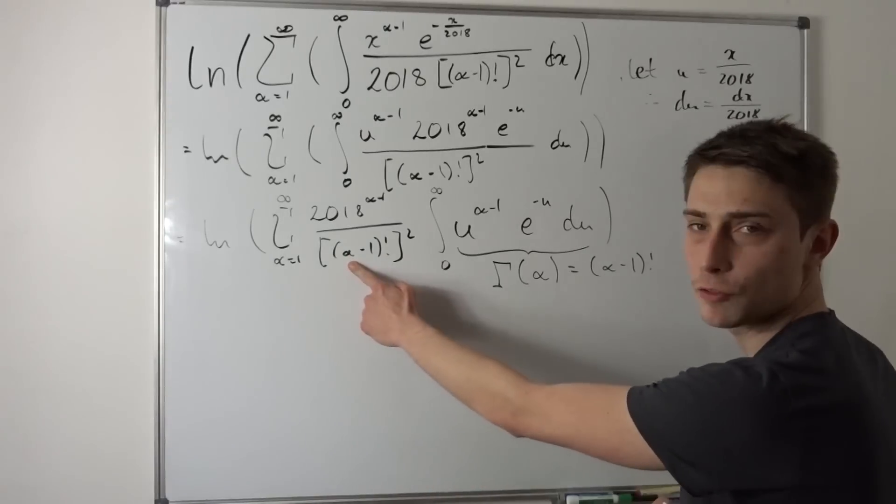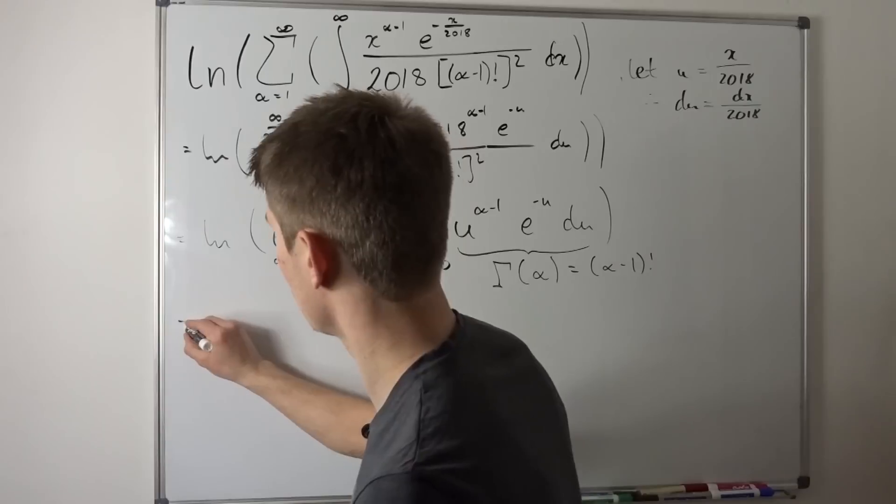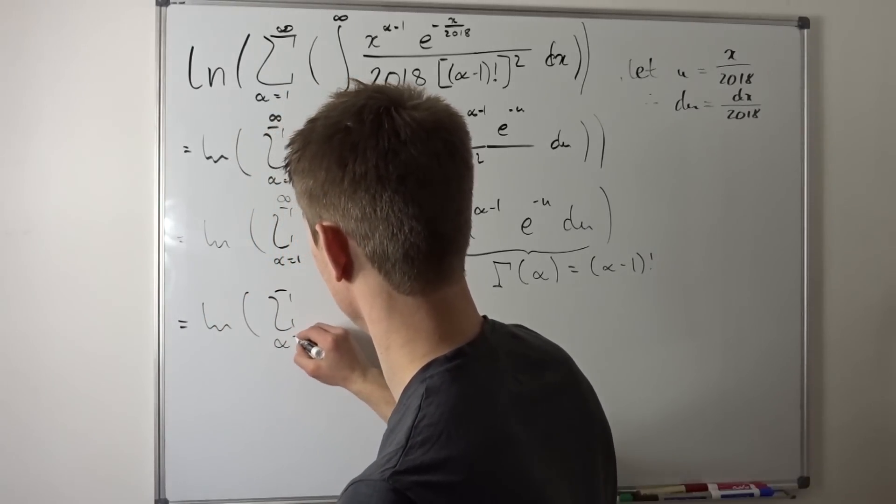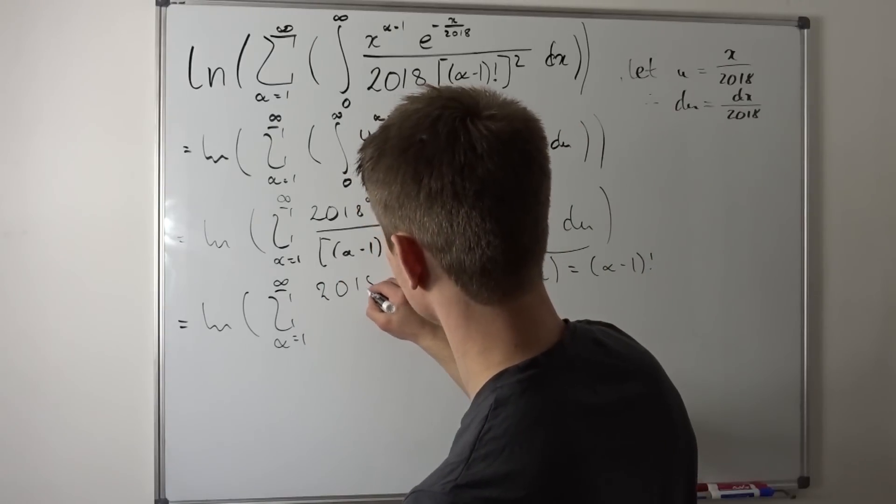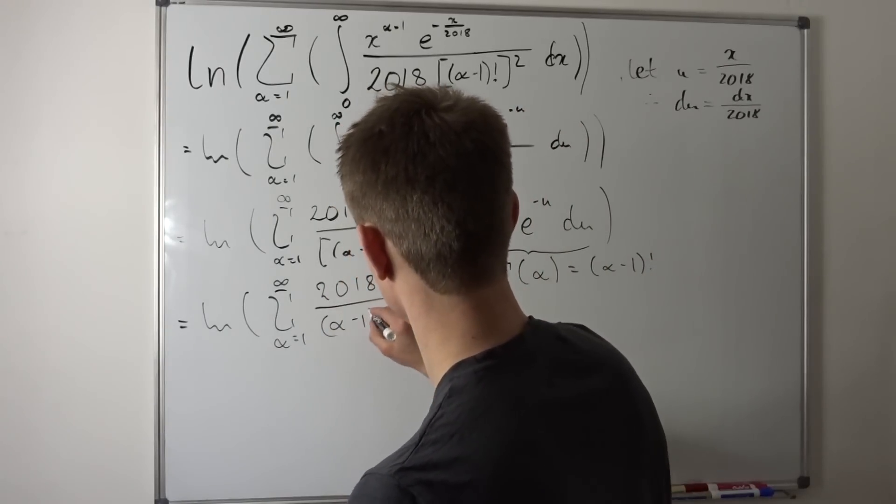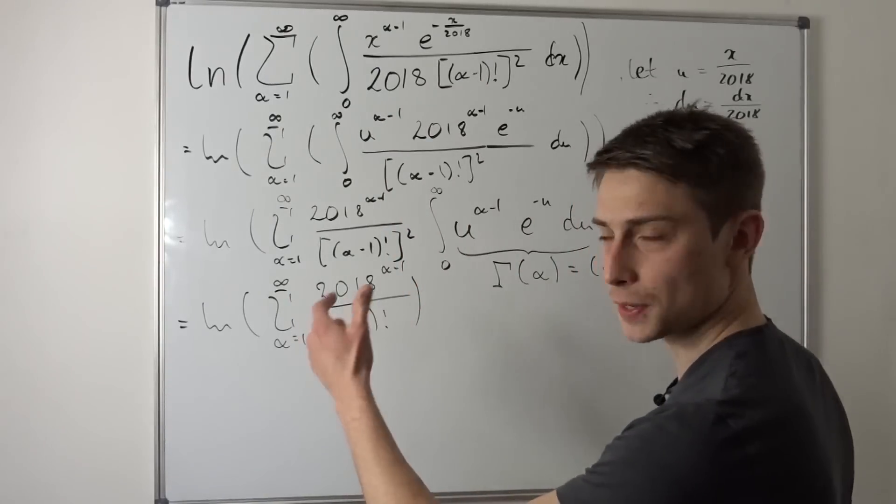And that's great because alpha minus 1 factorial will cancel out one time. So what we end up with right now is just a natural log of this sum, alpha equals 1 to infinity, of 2018 to the alpha minus 1 over alpha minus 1 factorial. And it might not be obvious at first sight, but this right here is just an exponential function.